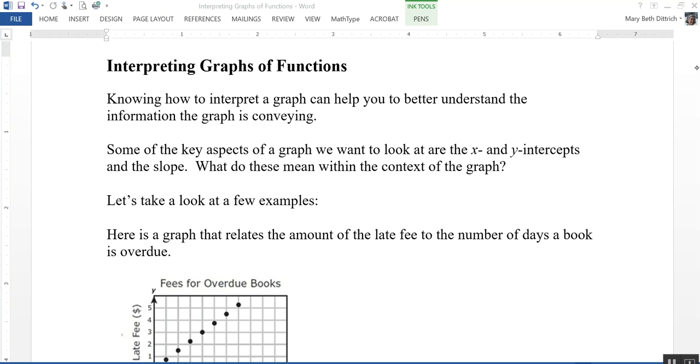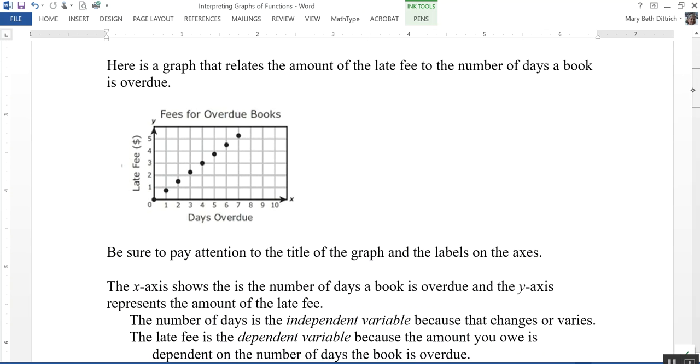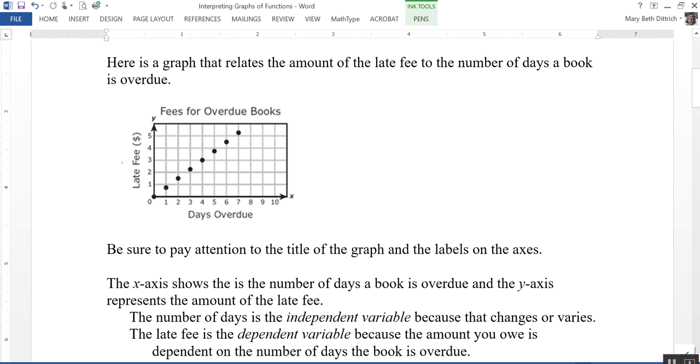Let's take a look at a couple examples here. So here's a graph that relates the amount of a late fee to the number of days a book is overdue. So on the x-axis I have the number of days overdue. On the y-axis I have the amount of the late fee. And it's always kind of nice when your graph has a title telling you what's going on.